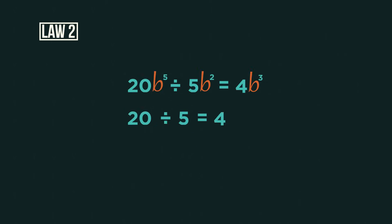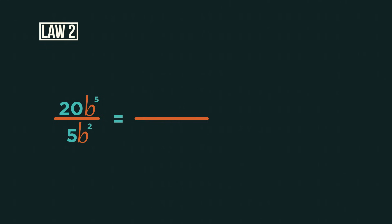So for this one, we do the numbers first and subtract the indices second. This is because if I wrote the equation out fully, it would be the same as writing this.